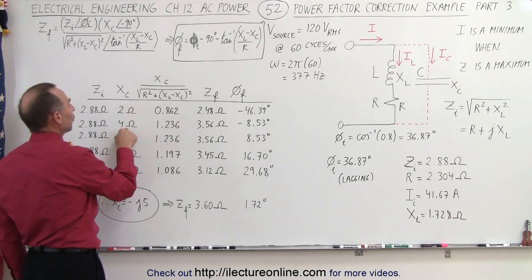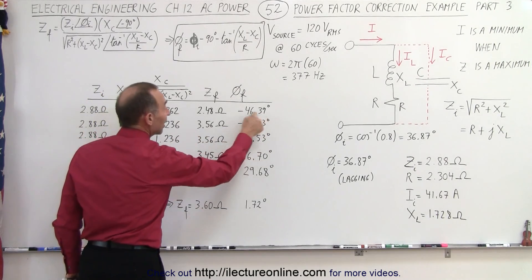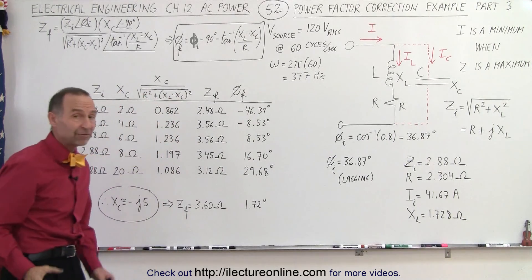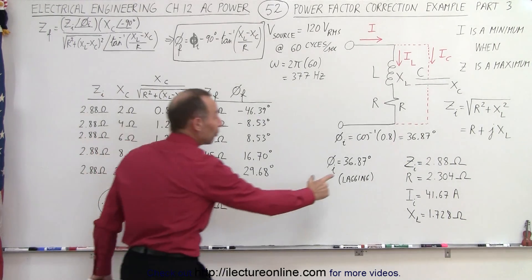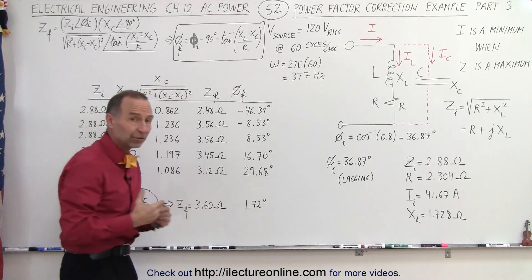We want the power factor to be as big as possible. So the next thing we did was put in four ohms for bigger impedance, and notice now we have a phase angle of only about minus 8.5 degrees, which is much better than what we had before. That means we're much closer to a power factor of one.